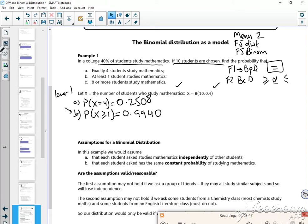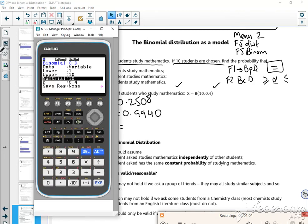Now, c says 8 or more, so x is greater than or equal to 8. So lower 8, upper 10. So lower 8, upper 10. 0.01223.